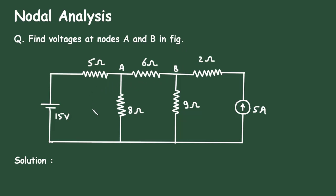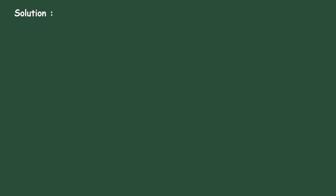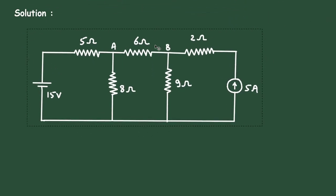Here in this circuit, we have to find its node voltages — node A voltage and node B voltage — by using the nodal analysis method. First of all, let us assume this is a reference node with zero voltage. Let us say this node voltage is Va and this node voltage is Vb.